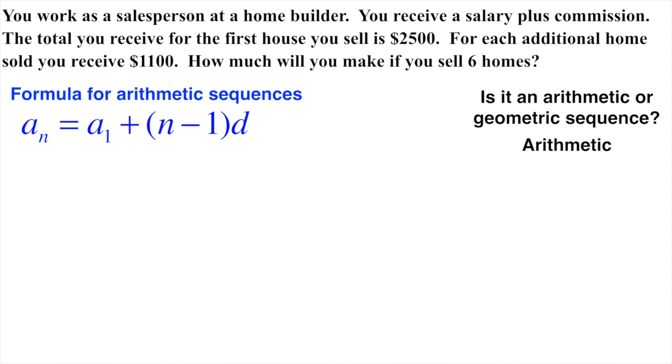Now that we know that, we can bring in our formula for arithmetic sequences. Really what we're going to start doing is just plug in what you know. We know that the first term in the sequence is going to be $2,500. That's if we sell one house we'll get $2,500.